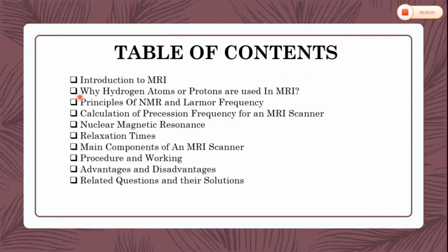Table of Contents: Introduction to MRI; why hydrogen atoms or protons are used in MRI; principles of Nuclear Magnetic Resonance and Larmor Frequency; calculation of precession frequency for an MRI scanner; Nuclear Magnetic Resonance relaxation times; main components of an MRI scanner; procedure and working; advantages and disadvantages; related questions and their solutions. Today, we will focus on the first three points.